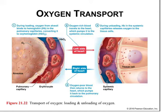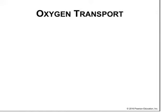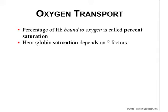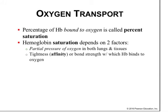Once fully saturated, oxygen-rich blood travels to the left side of the heart, which pumps it to the systemic circulation. During unloading, hemoglobin in systemic capillaries releases oxygen to cells of tissues. The oxygen-poor blood returns to the right side of the heart to be pumped back to the lungs through the pulmonary arteries. The percentage of hemoglobin bound to oxygen is called the percent saturation. Hemoglobin saturation depends on the partial pressure of oxygen in both lungs and tissues, and the affinity — or bond strength — with which hemoglobin binds to oxygen.